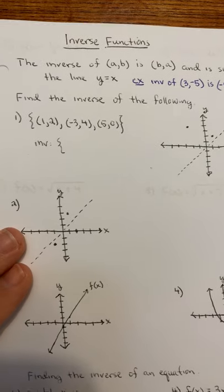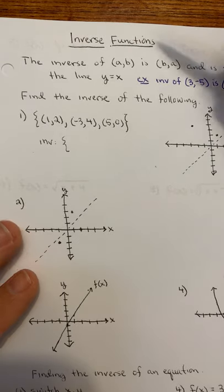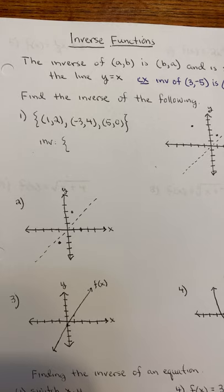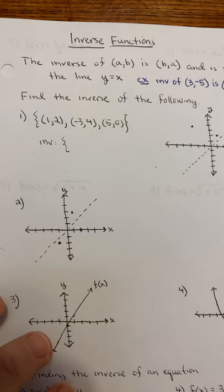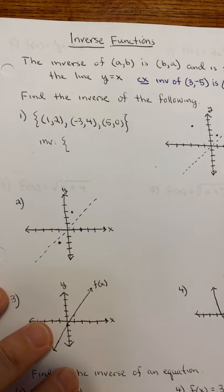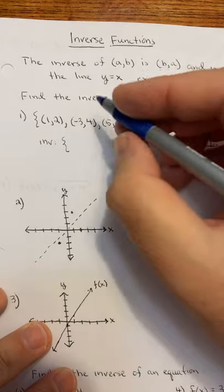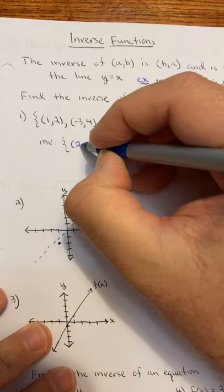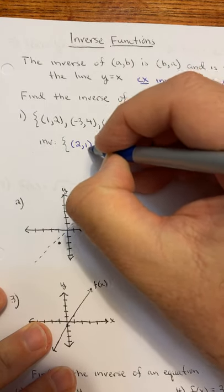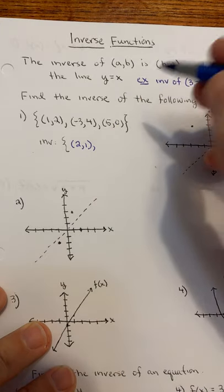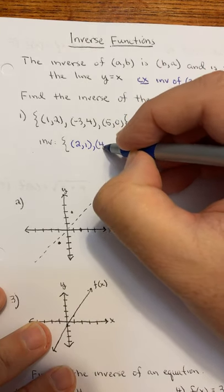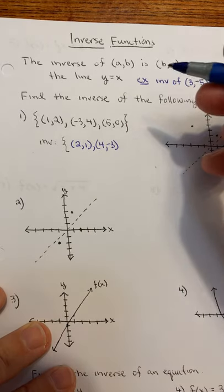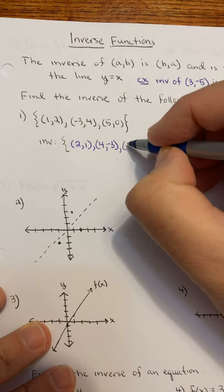So if you're given a set of ordered pairs, find the inverse of the following. The inverse of that function would just be switching the x and y. So the inverse of (1, 2) is (2, 1). The inverse of (-3, 4) is (4, -3). And the inverse of (5, 0) is (0, 5).